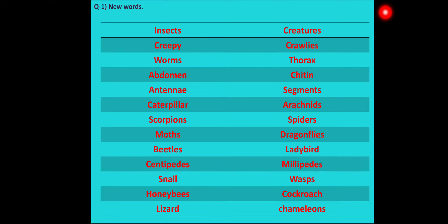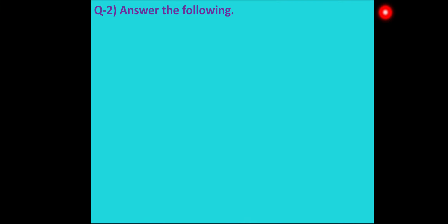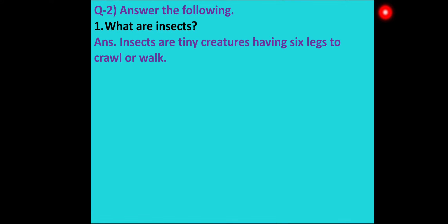You have to write these words two times and also try to learn them. Now move to question number 2: Answer the following. First question - What are insects? Answer: Insects are tiny creatures having six legs to crawl or walk.